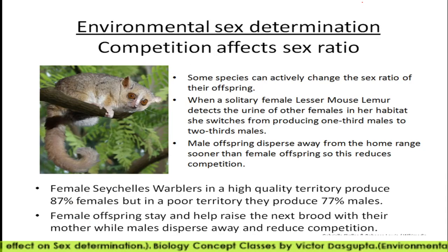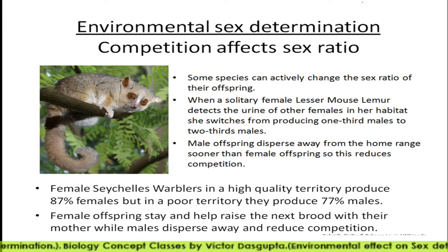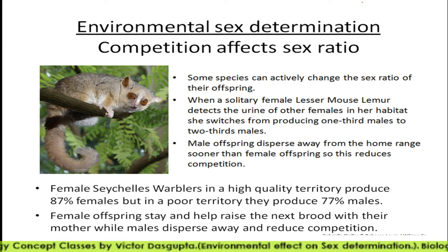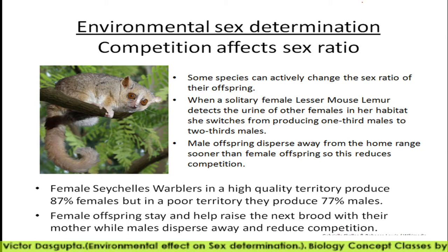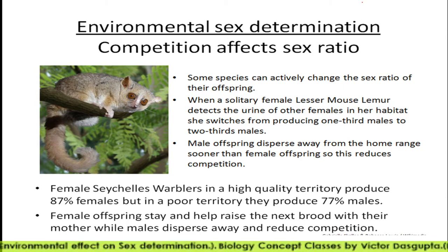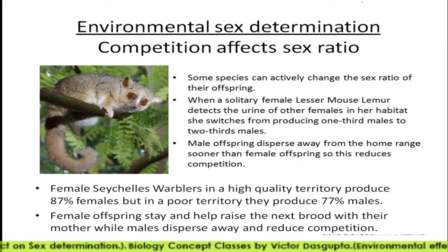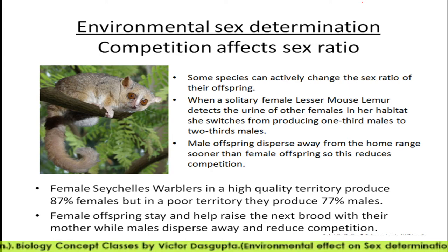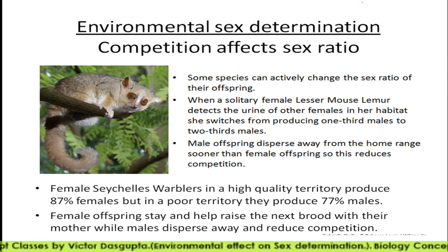Competition also affects sex determination. In the case of the lesser mouse deer, they detect the urine scent or pheromones present in the urine of other females in their habitat, and they switch to produce one-third males to two-thirds males in the population. Male offspring disperse away from the home range, which reduces competition for the females.